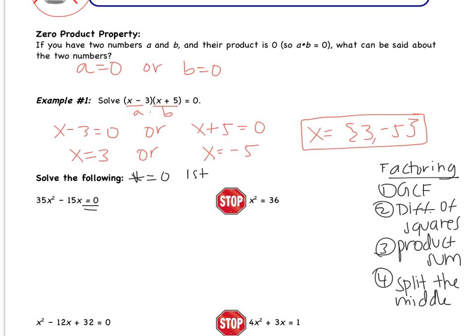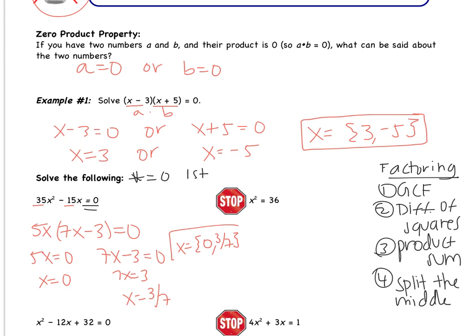So looking at our first example, the 35x squared minus 15x equals zero. Starting out, is there a GCF? Well between 35 and 15, I can take out a 5. Between x squared and x, I can factor out an x. This leaves me with 7x minus 3 equals zero. Now that I have my two parts, by the zero product property, I can set them both equal to zero. So I get 5x equals zero, and 7x minus 3 equals zero. Dividing by 5, I get x equals zero. If I add 3, I get 7x equals 3, and x equals 3 over 7. So my solution set in this case includes zero and 3 over 7. So if I substitute either one of those numbers into my original equation, I'm going to end up with zero.